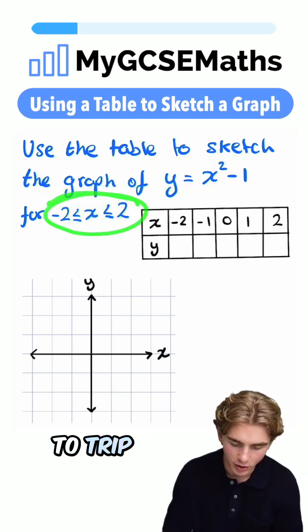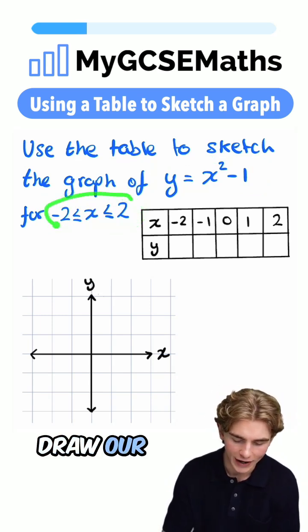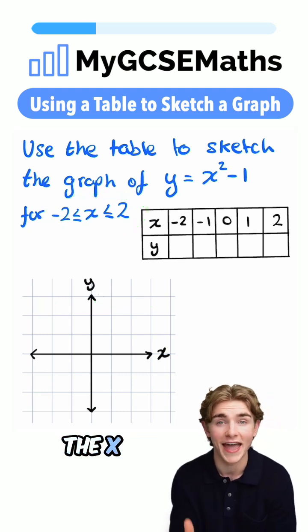Now, this part here is going to trip a lot of people up, but don't worry. All it means is we only have to draw our graph going along to negative two and across to two in the x direction.